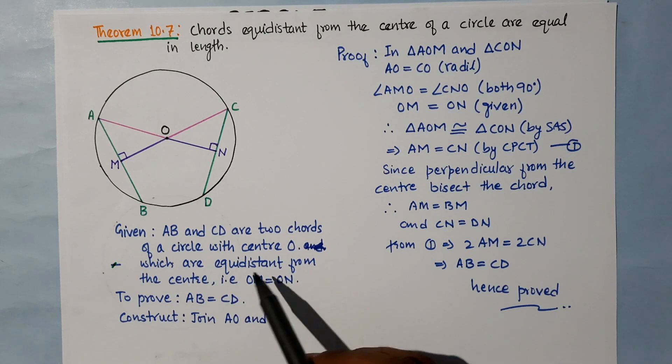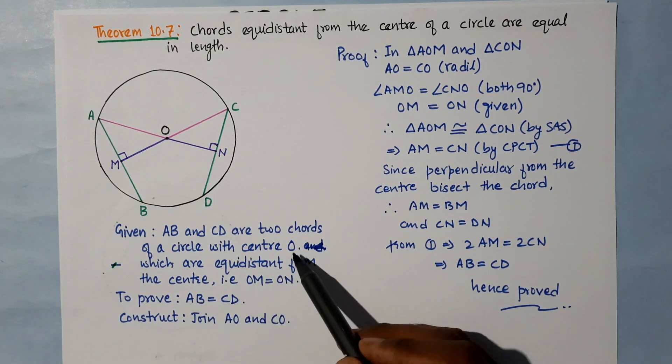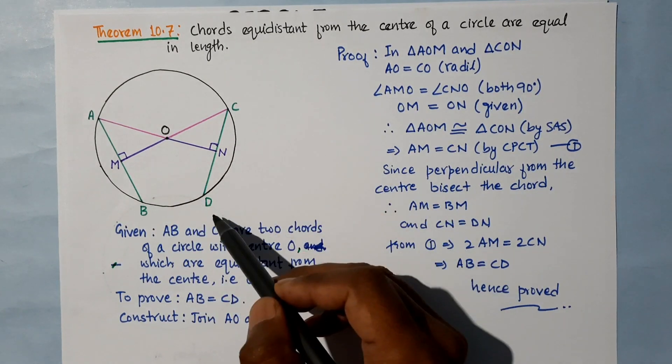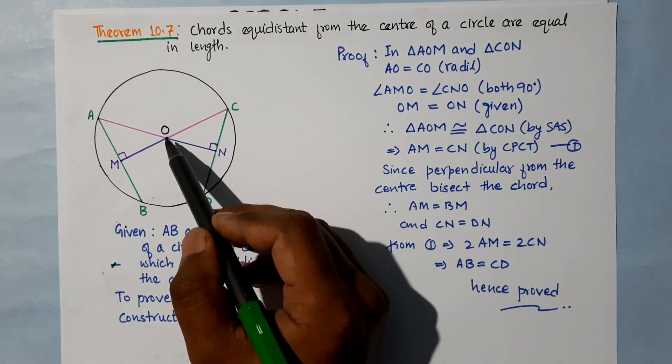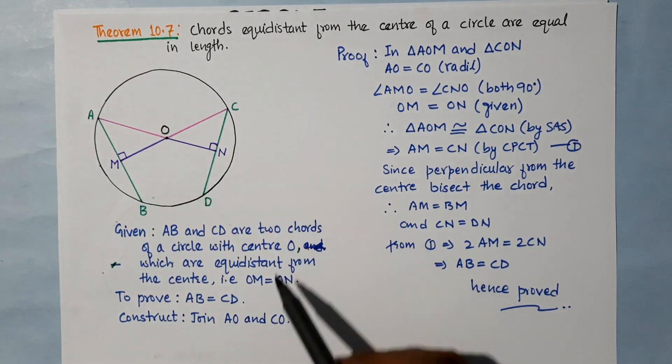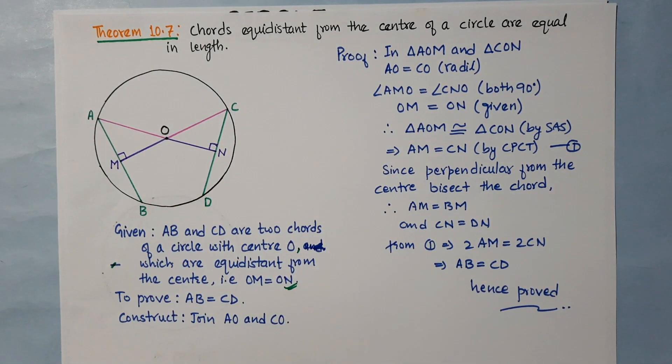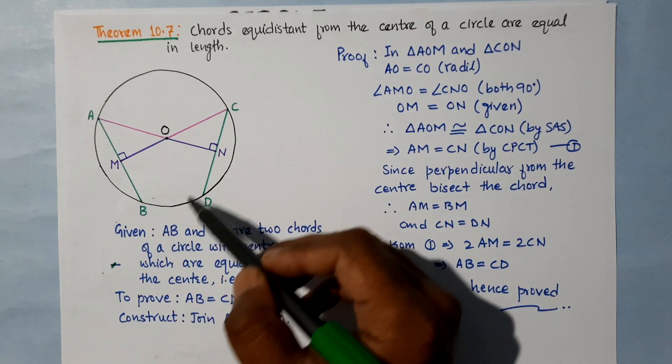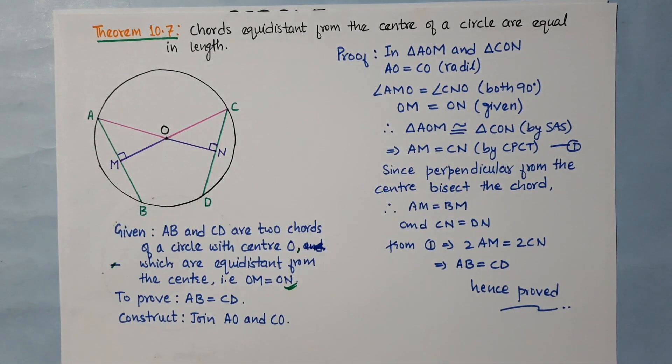Which are equidistant from the center. We have to prove AB and CD are equal. These chords are equidistant from the center, that means OM and ON are equal, and we have to prove AB is equal to CD.